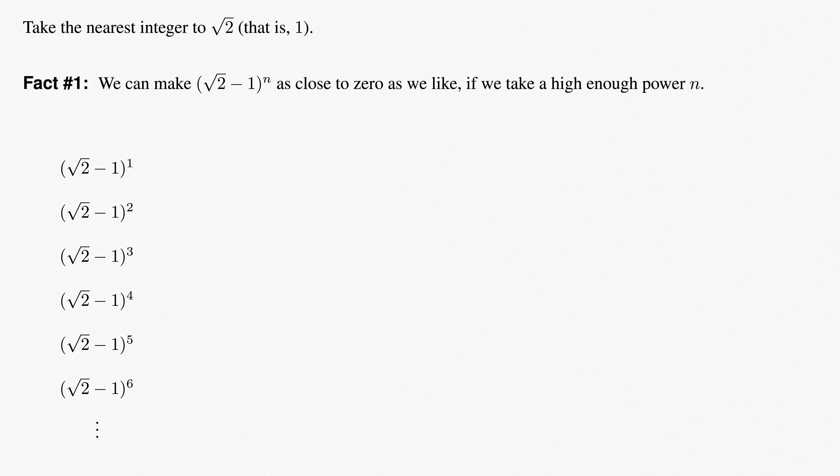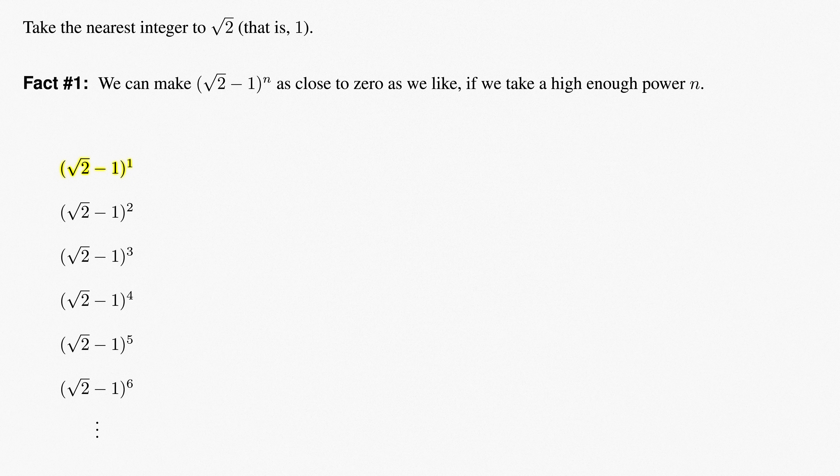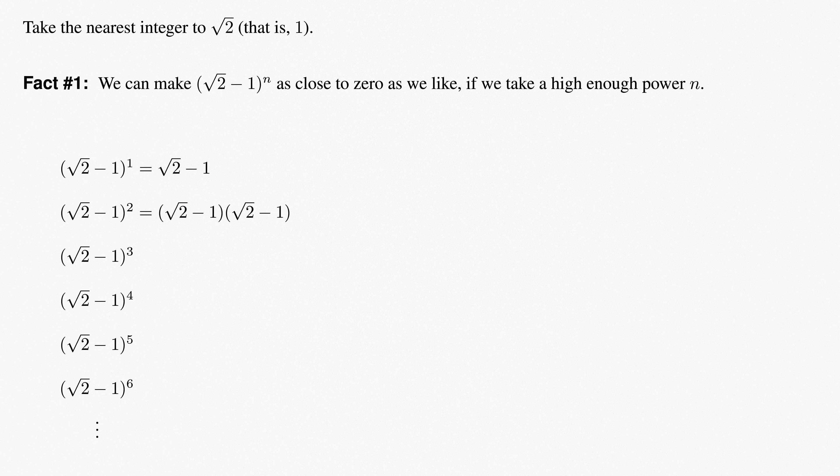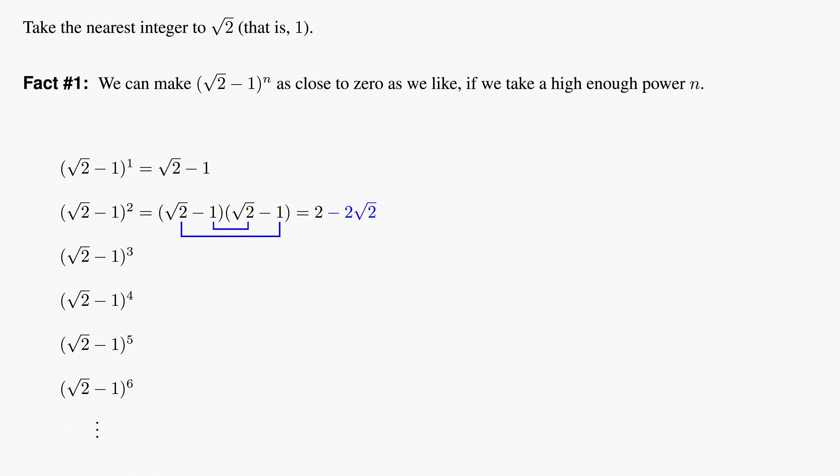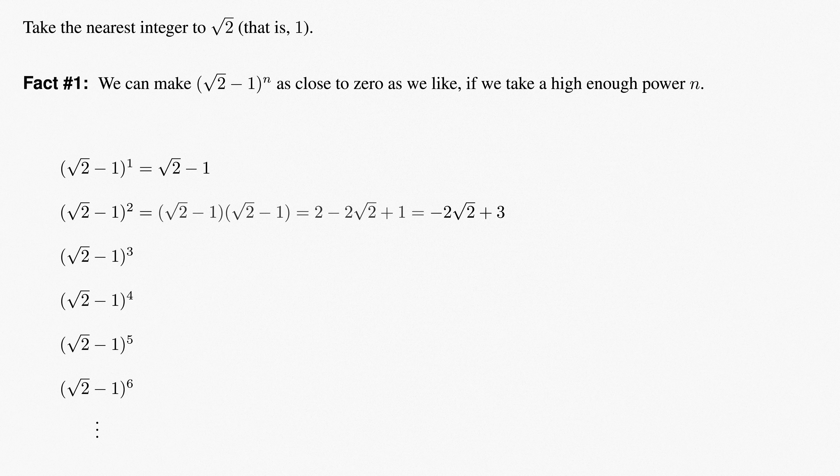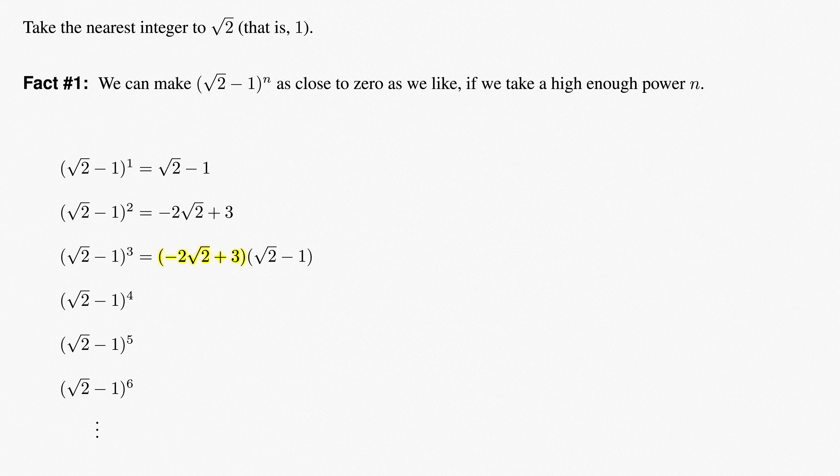Second is an observation about the form that these powers take. The first power, of course, is just root 2 minus 1. We can obtain each subsequent power by multiplying the previous power by root 2 minus 1. The second power is root 2 minus 1 times root 2 minus 1, and foiling this out, we get 2 minus 2 root 2 plus 1, which simplifies to negative 2 root 2 plus 3. The third power is this times root 2 minus 1. Foiling out again, negative 2 root 2 plus 3 times root 2 minus 1 equals negative 4 plus 5 root 2 minus 3, which simplifies to 5 root 2 minus 7.